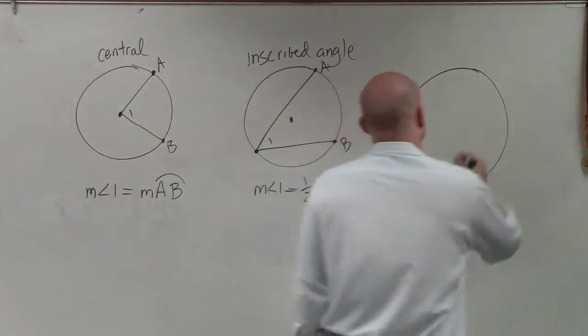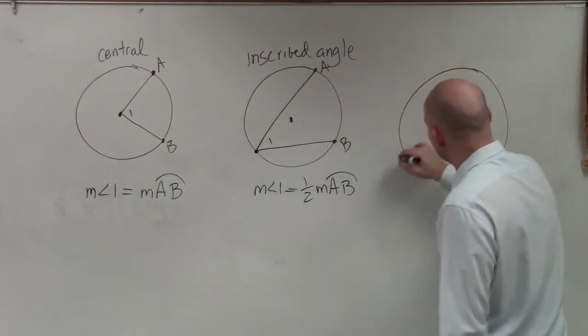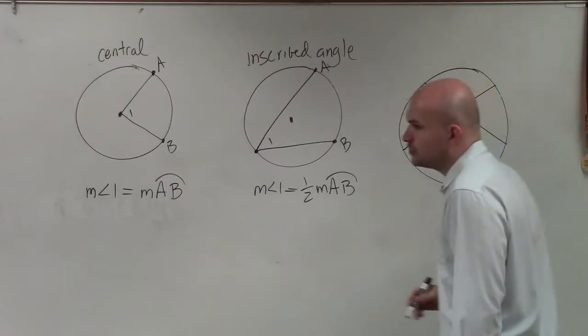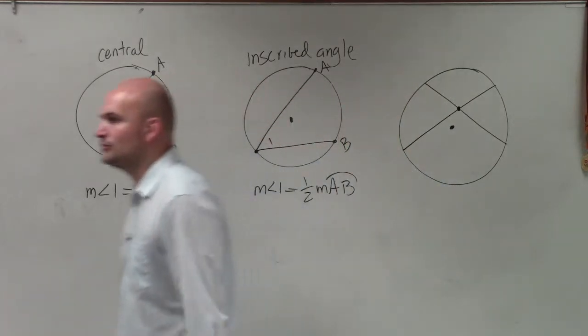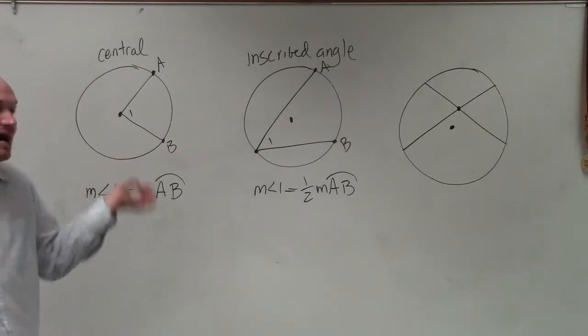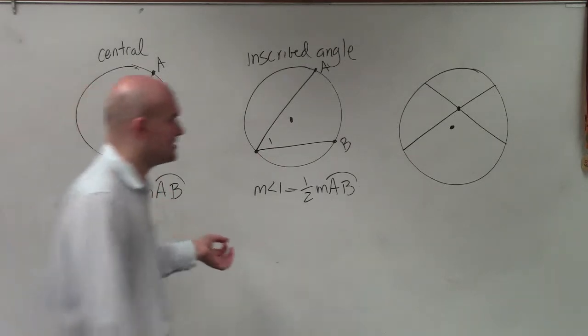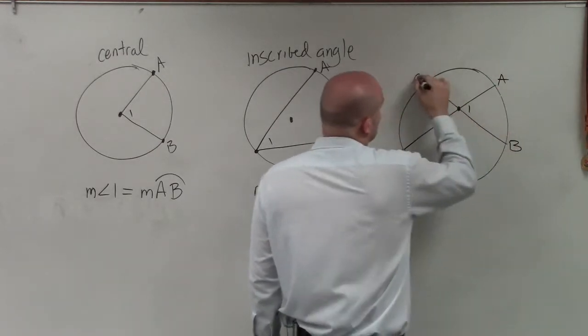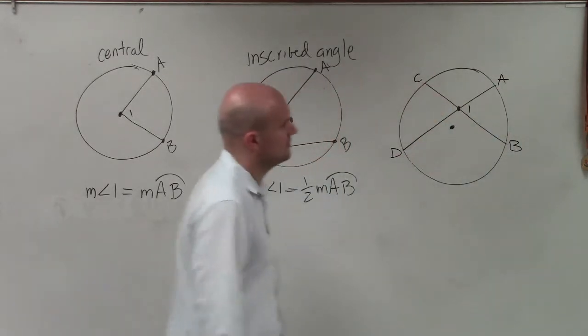So now, let's look at the last one. And this is going to be created when we have two chords, or secant lines going through that, are going to create a point that is inside the circle, but not on the circle or not in the center. So we'll call measure of angle 1, we'll say A, B, C, D.